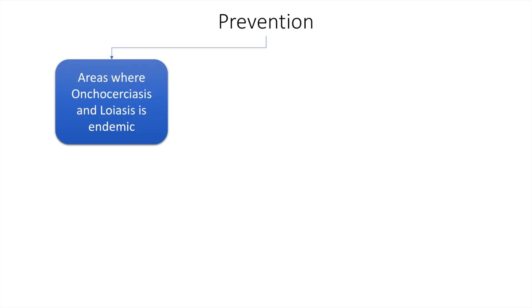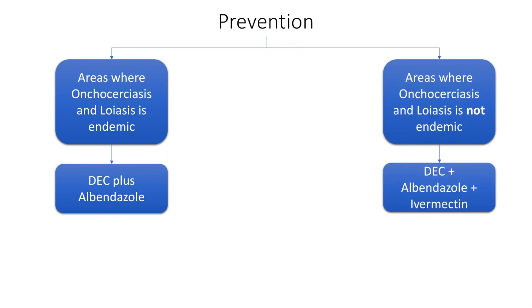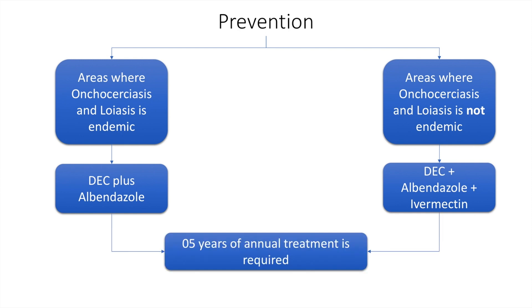Prevention of filariasis depends on whether or not onchocerciasis and infection with Loa loa is endemic. If it is endemic, then treatment with diethylcarbamazine and albendazole is required. If the area is not endemic, then diethylcarbamazine, albendazole, and ivermectin is required. In either case, treatment for 5 years may be required for prevention and/or elimination of transmission of the disease.